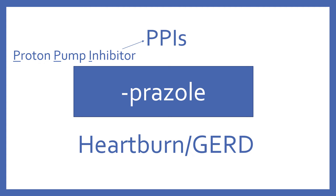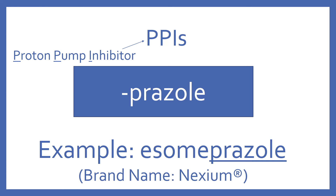PPIs, which stands for proton pump inhibitors, end in the suffix -prazole. They are for heartburn and GERD. An example of a PPI is esomeprazole, and its brand name is Nexium.